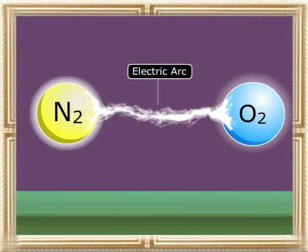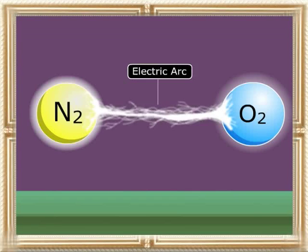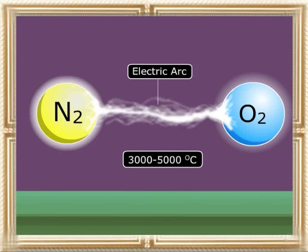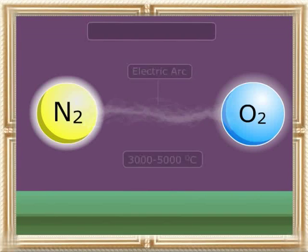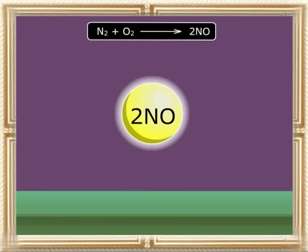Due to the reaction between nitrogen and hydrogen under the required conditions, ammonia is formed. When nitrogen reacts with oxygen, nitrogen combines with oxygen only in presence of an electric arc at a temperature of 3000 to 5000 degrees Celsius to form nitric oxide. Thus, we can summarize that when nitrogen reacts with metals it forms nitrides, when it reacts with hydrogen it forms ammonia, and when nitrogen reacts with oxygen it forms nitric oxide.